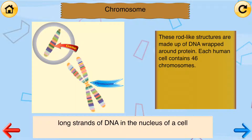Chromosome. Long strands of DNA in the nucleus of a cell. These rod-like structures are made up of DNA wrapped around protein. Each human cell contains 46 chromosomes.